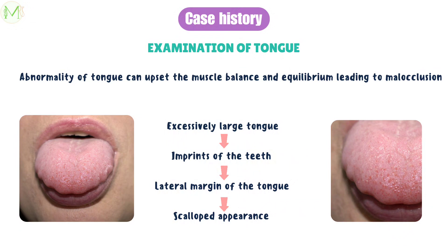Examination of tongue. Tongue is a very important muscular organ of the oral cavity and it helps in facial growth as part of the functional matrix. Any abnormality of the tongue can upset muscle balance and equilibrium, which in turn leads to malocclusion. The major factor of the tongue which influences occlusion is its size. An excessively large tongue can be identified by the imprints of the teeth on the lateral margin of the tongue, giving it a scalloped appearance, which is notable in this image.